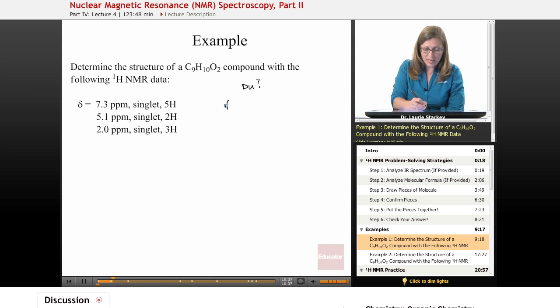The way we calculate the DU is we ask ourselves, if it was saturated, what would the formula be? We have 9 carbons. It would be C9H to the, remember it was C to the N, H to the 2N plus 2. So it's 9 times 2 is 18, plus 2 is 20. If it was saturated, it would be C9H20. What do we have? We have C9H10.